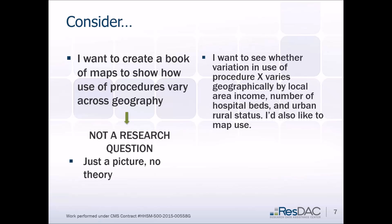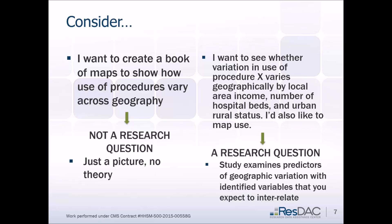However, we can rewrite this just slightly and it changes completely: I want to see whether variation in procedures varies geographically by local area income, number of hospital beds, and urban-rural status. I'd also like to map use. Notice I'm still mapping use and still creating my book of maps, but I'm also asking questions about predictors of geographic variation.